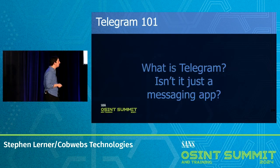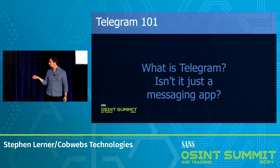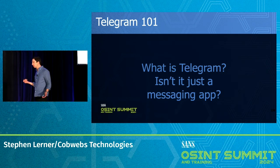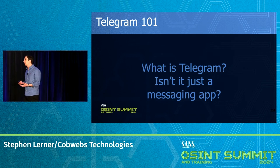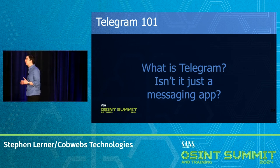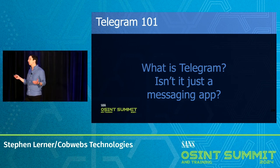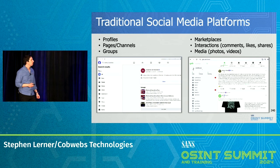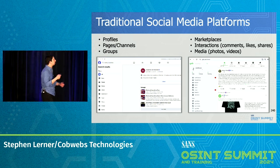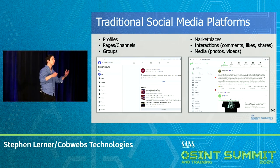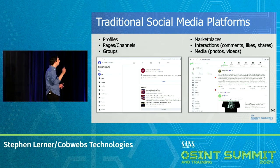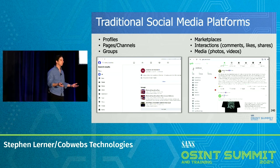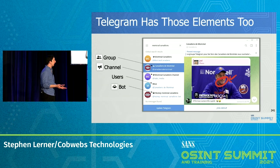So what is Telegram? I thought it was just a messaging app, but it's not. My thesis here is that it is a social network unto itself, like any other social networks that we are familiar with. Traditional social media platforms have profiles, pages, channels, groups, and marketplaces — you can like, share, post, repost, photos, videos, all this information. And Telegram has the same: it has groups, channels, users, and bots.